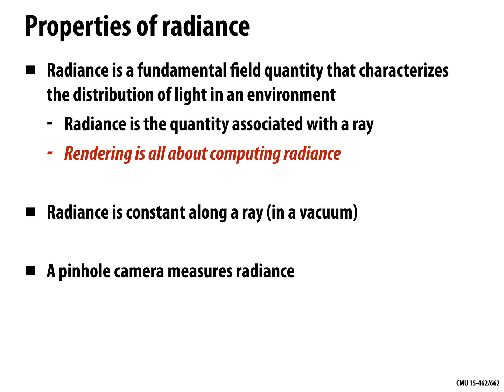Radiance is the fundamental quantity characterizing the distribution of light in an environment — it is the quantity fundamentally associated with a ray. Rendering is all about computing radiance for rays. Radiance is constant along a ray, which is why we can associate a single number with a ray. A pinhole camera directly measures radiance: the value stored at each sensor point is the radiance for a single ray through space. If the hole gets bigger, each sensor point integrates radiance over slightly different directions.